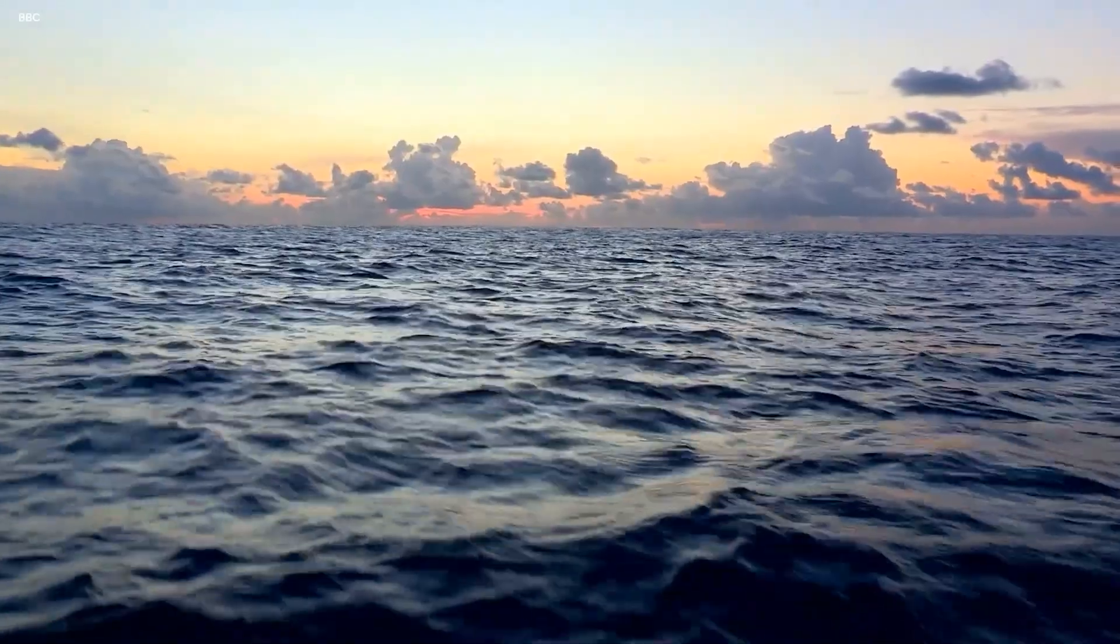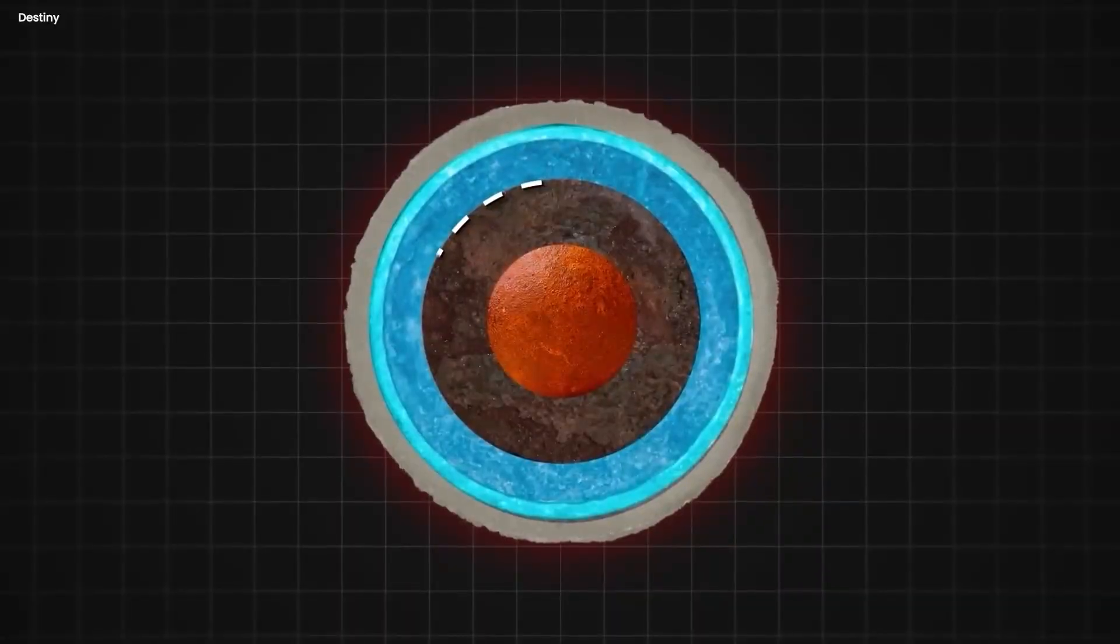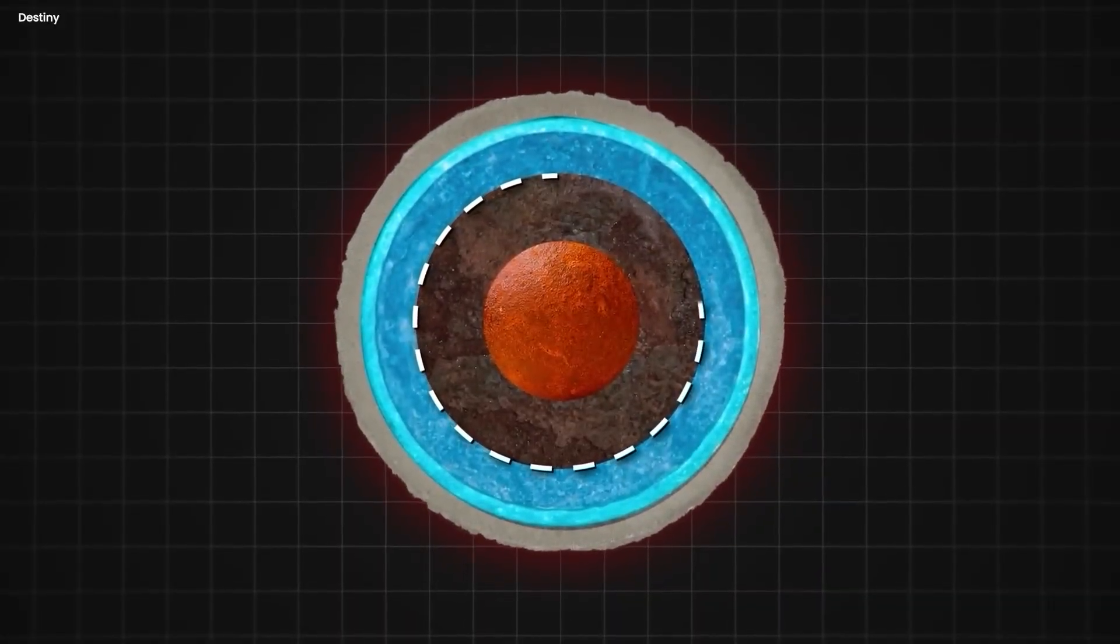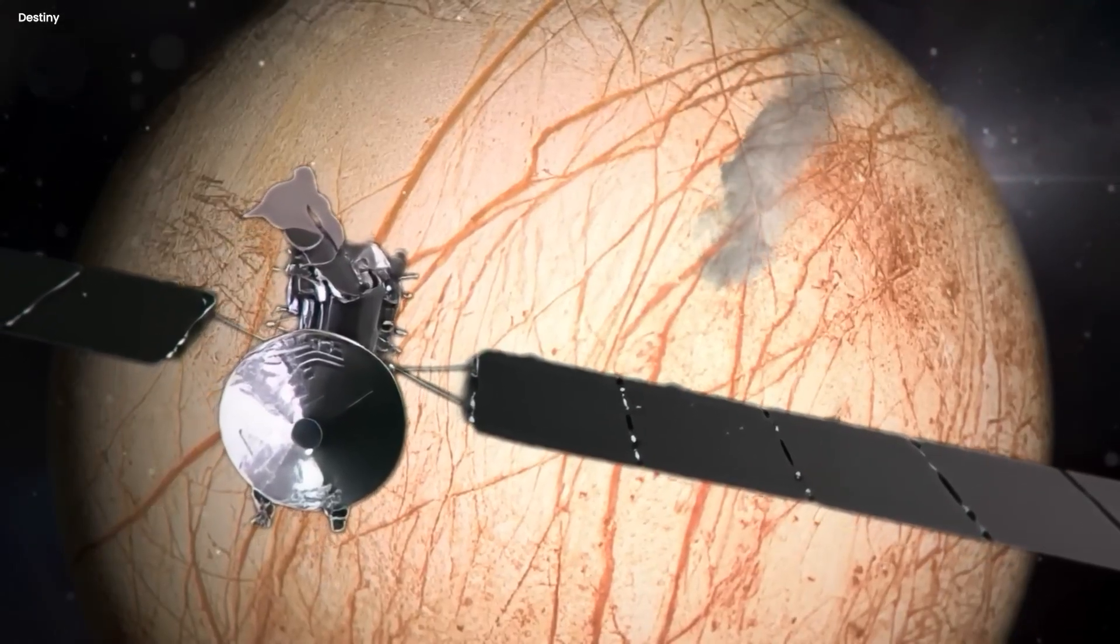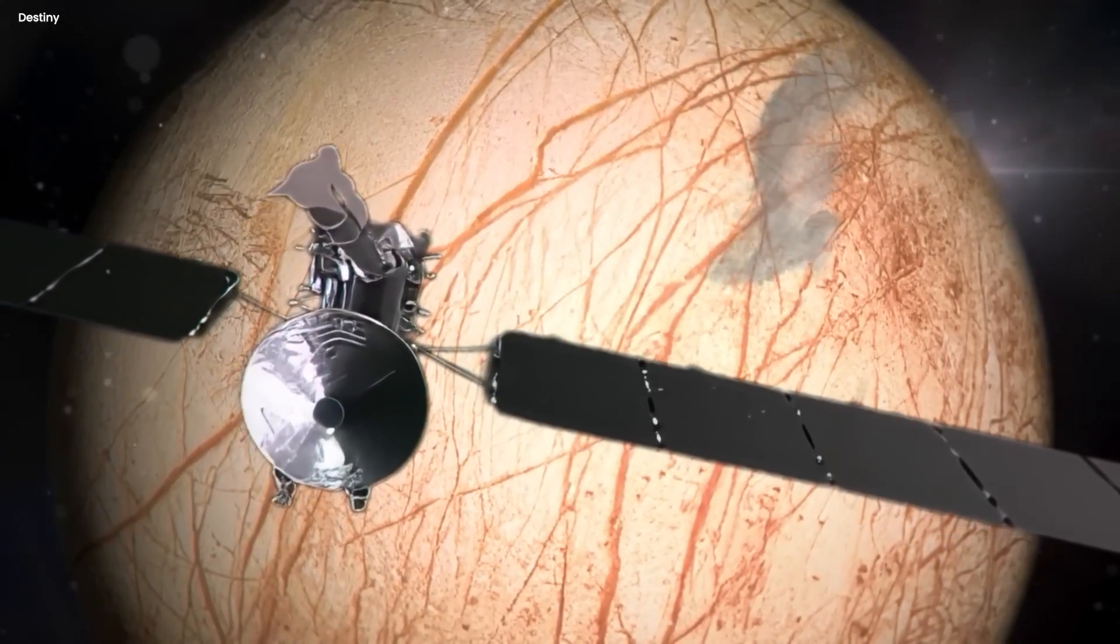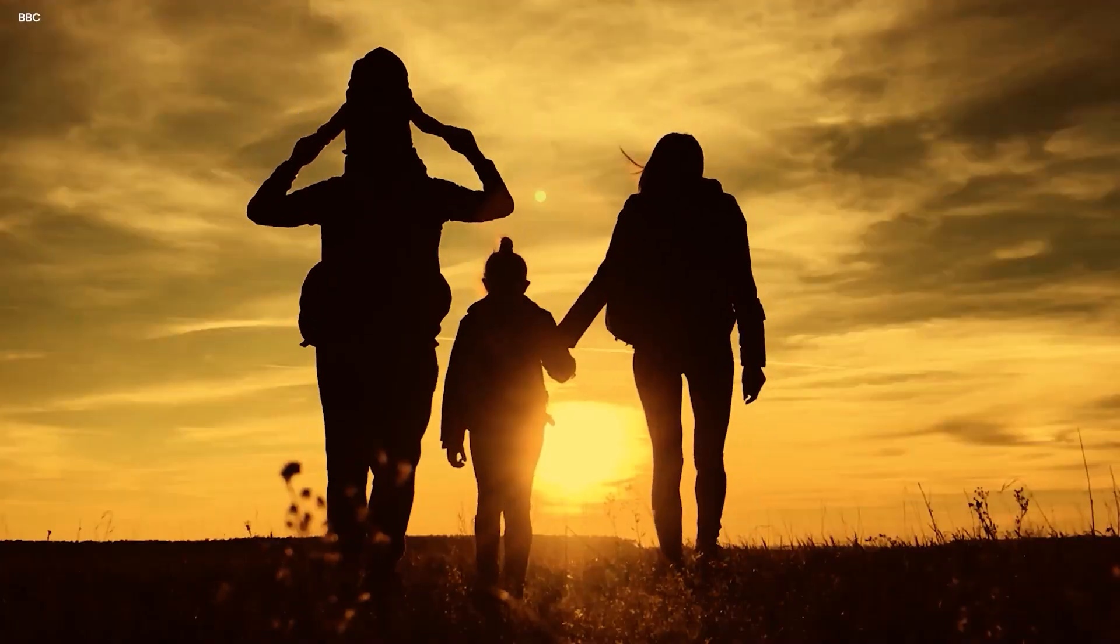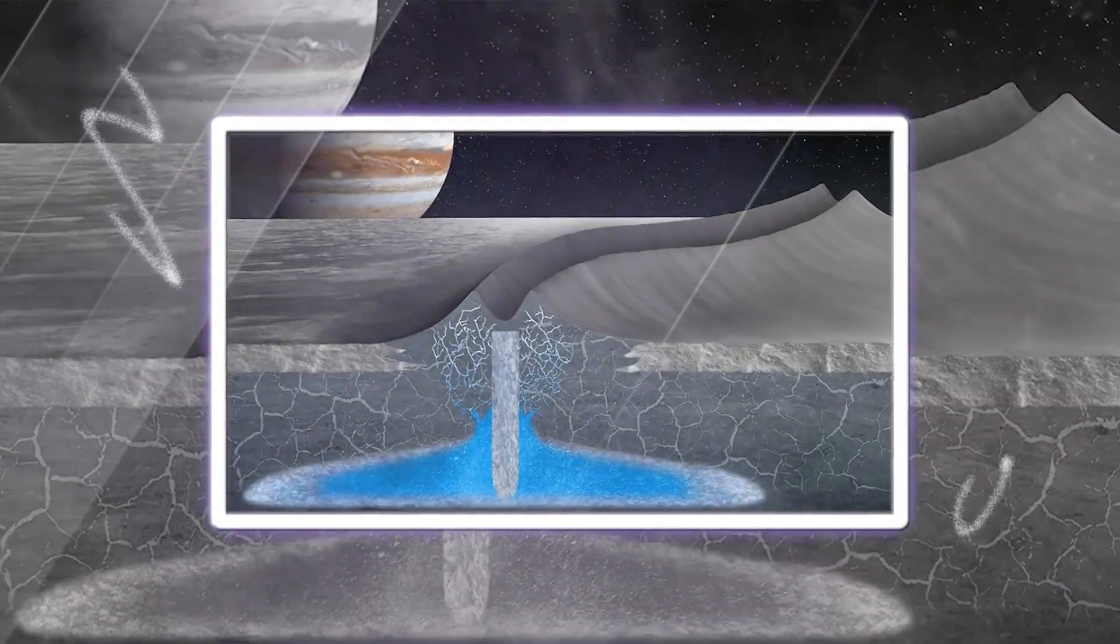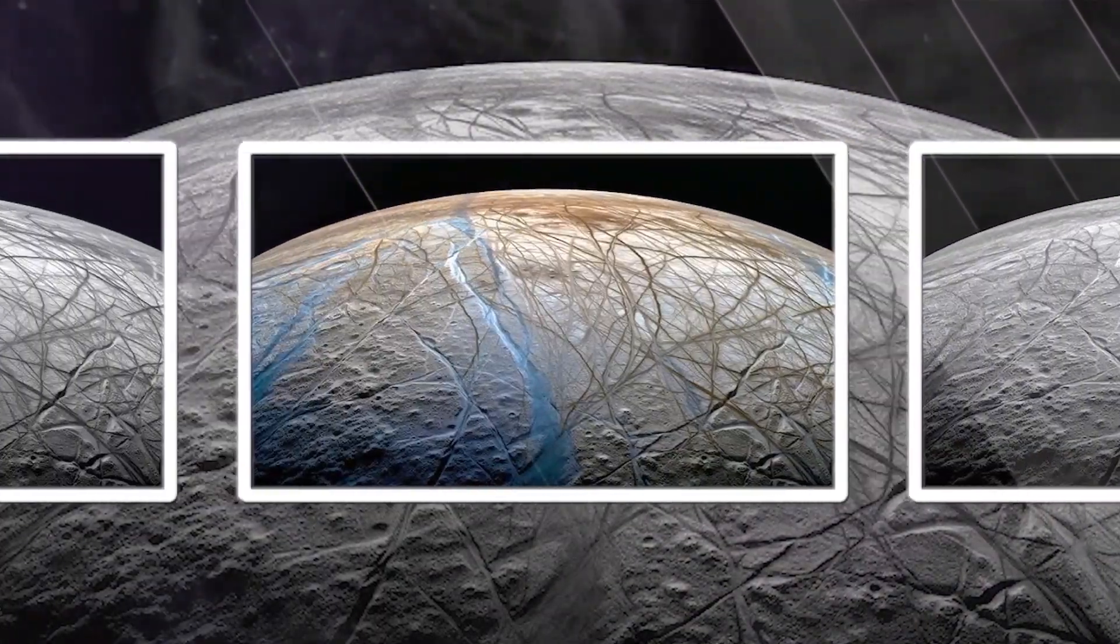The entire ocean of Earth, every drop of water in every sea, lake, and river, wouldn't even come close to filling up Europa's subsurface ocean. So if you're an alien probe looking for life, Europa is a pretty compelling target. It's got water, it's got energy from Jupiter's tidal forces heating the interior, and it's got all the ingredients necessary for life to exist. Earth has life on its surface, but Europa might have an entire ocean full of alien organisms living beneath the ice. We don't know. But the potential is there.